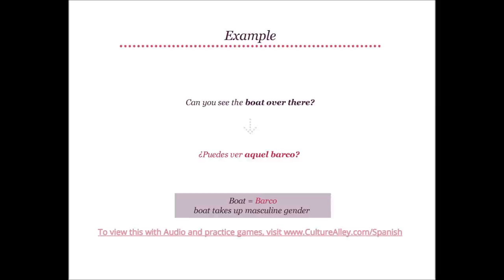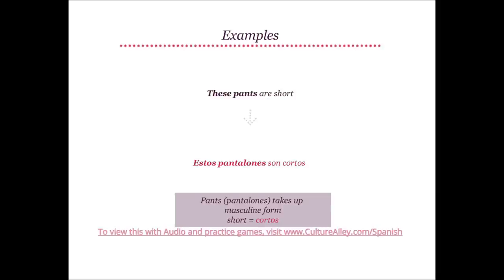Let us try and translate 'Can you see the boat over there?' — ¿Puedes ver aquel barco? Make a note that 'boat' takes up masculine gender and gets translated to barco. These pants are short translates as Estos pantalones son cortos, where pants or pantalones takes up masculine form and 'short' becomes cortos in Spanish.